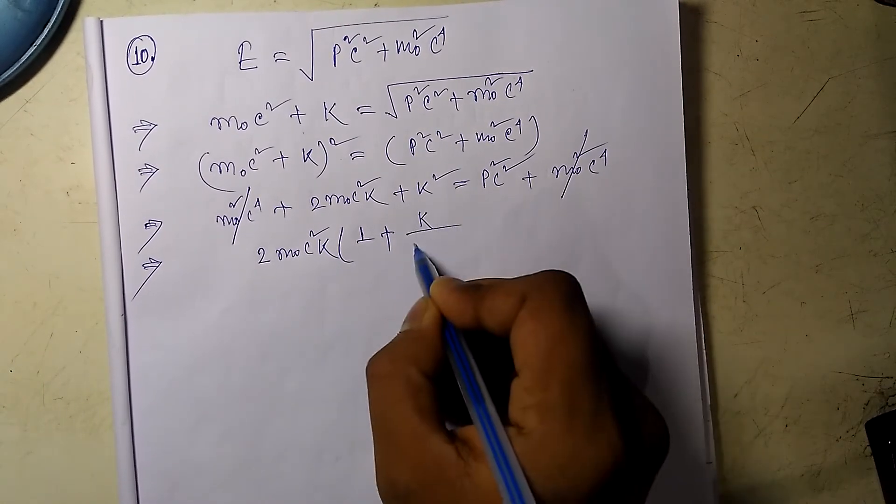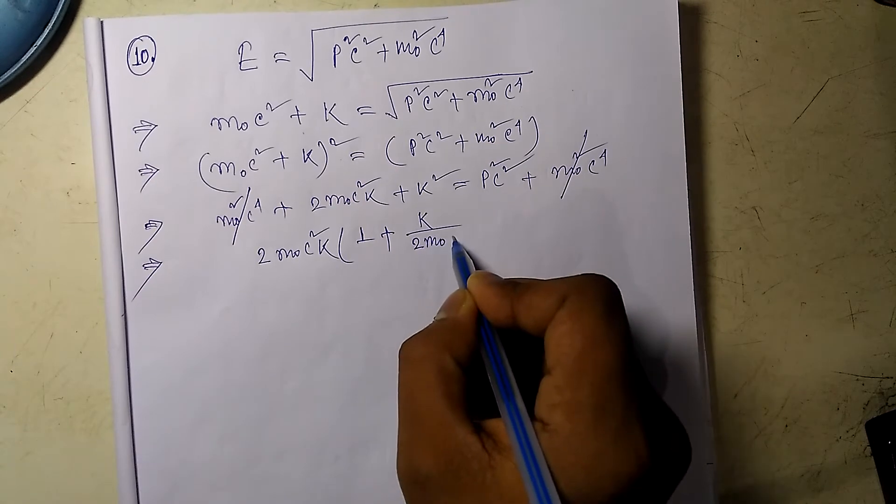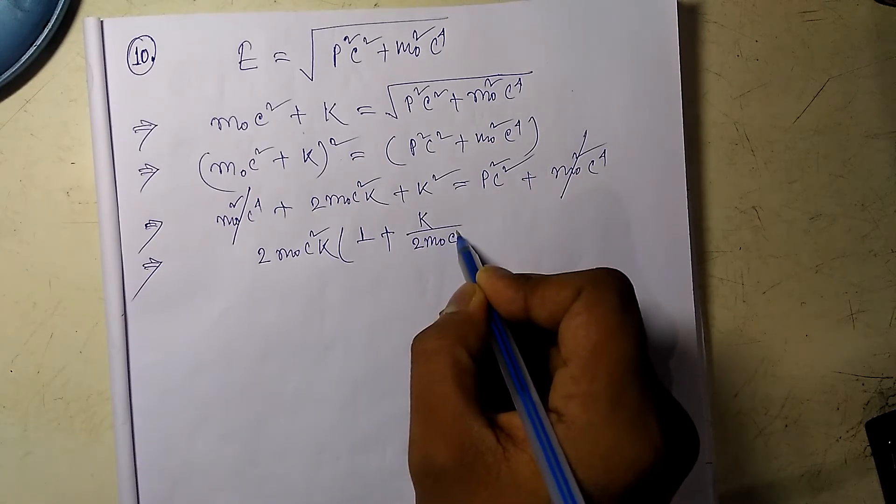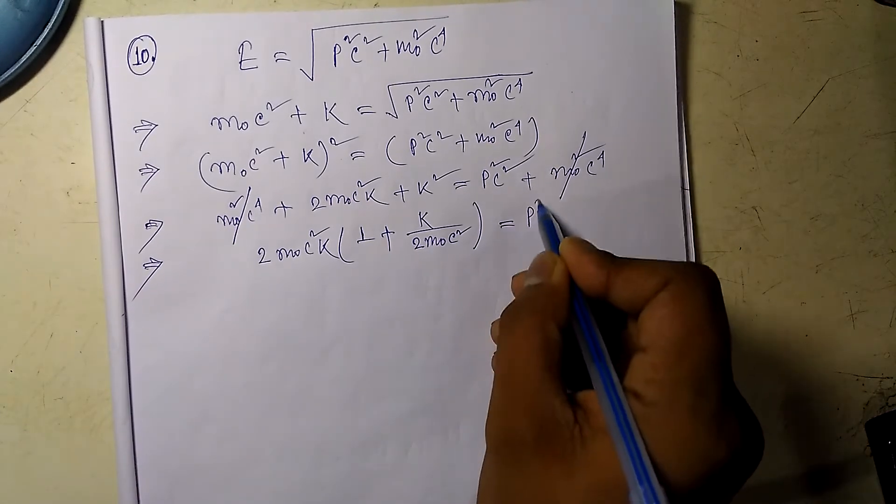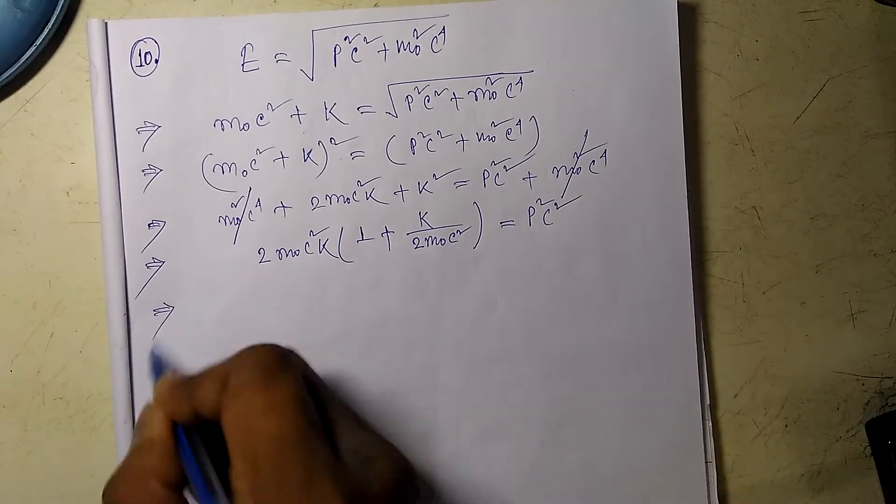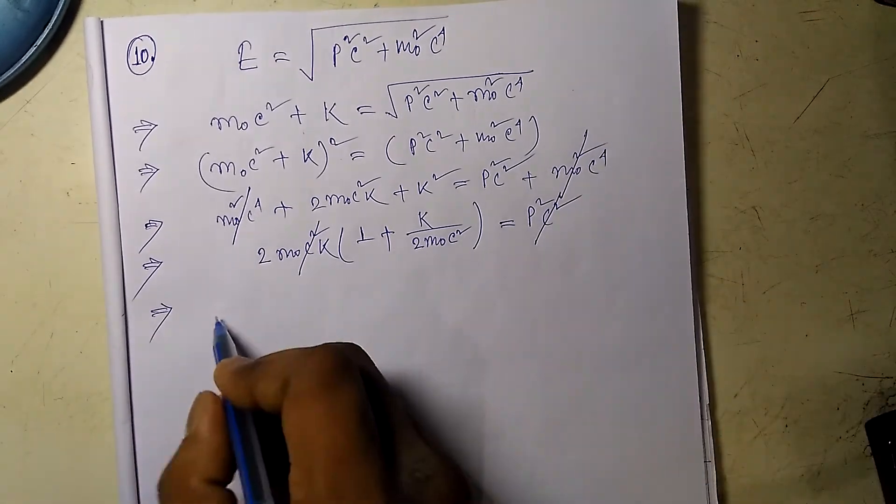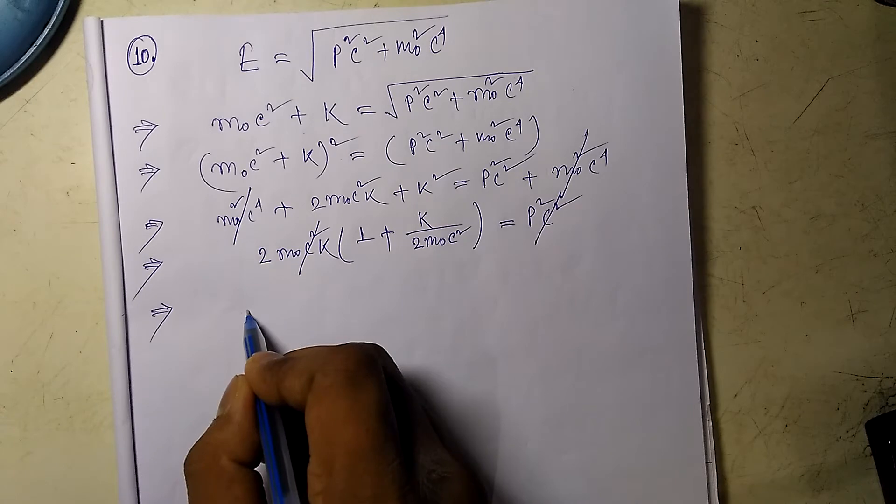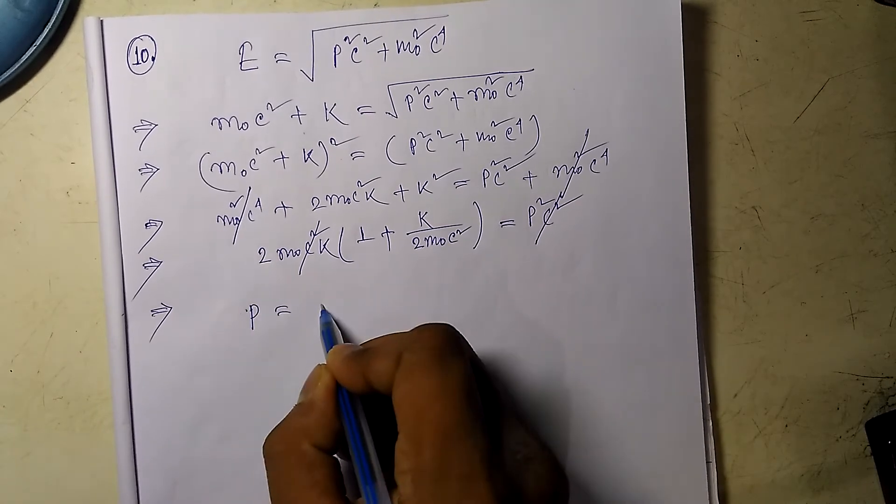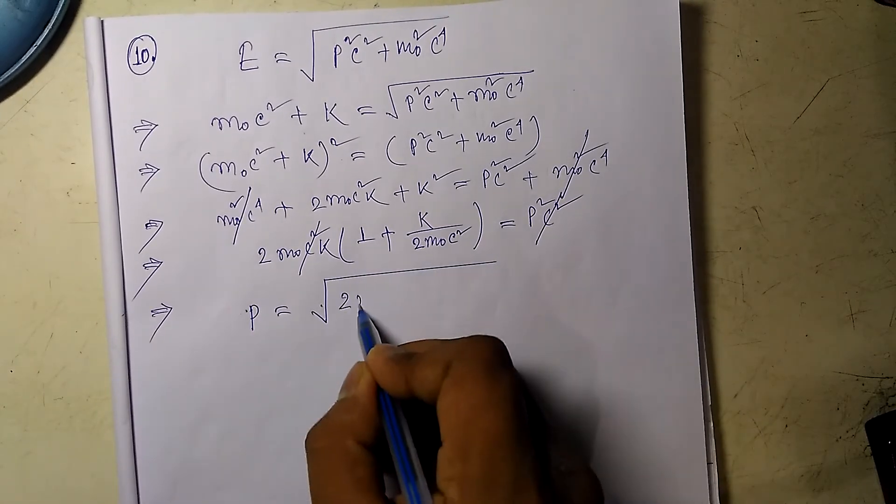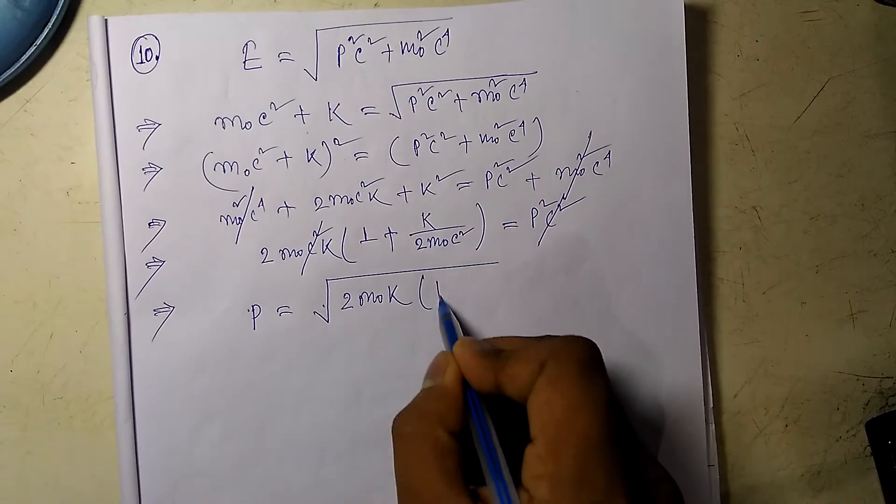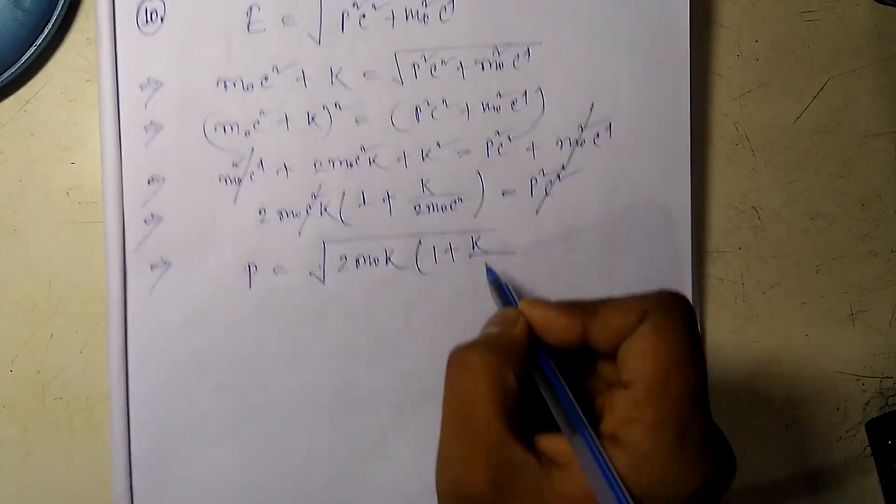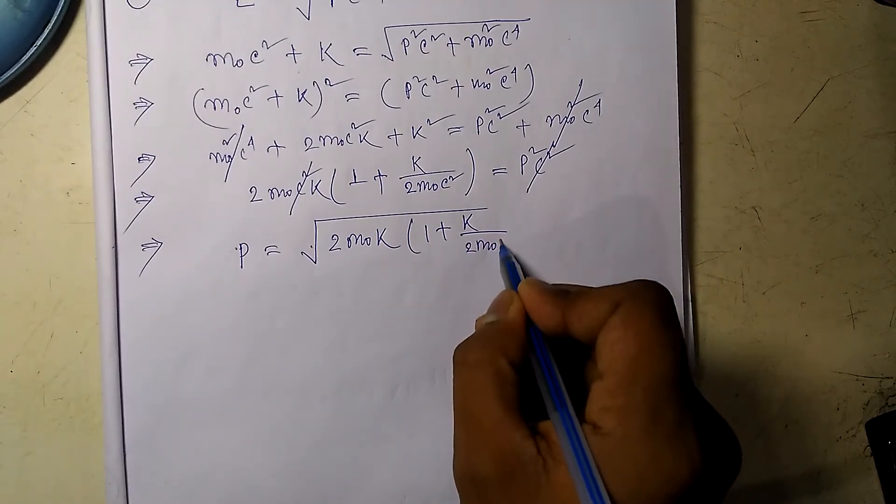The c² terms cancel out, so you have p equals the square root of 2m₀K times (1 plus K divided by 2m₀c²).